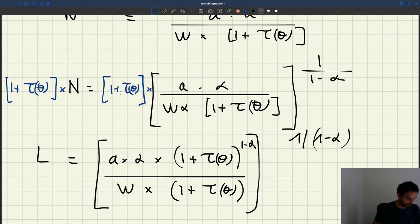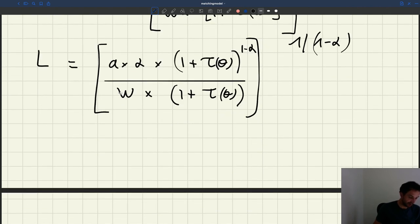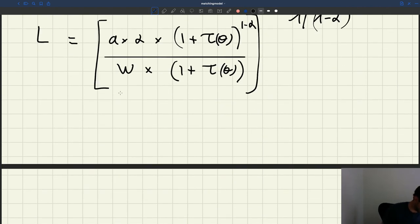So I did that just to be able to bring it inside the parenthesis. And then now let me just simplify everything. You can see I have a (1 + τ(θ)) here that I can eliminate. And then I can just eliminate the 1 here. I eliminate the (1 + τ(θ)) in the numerator and in the denominator.